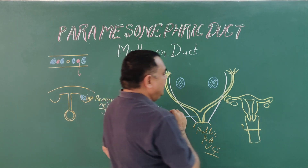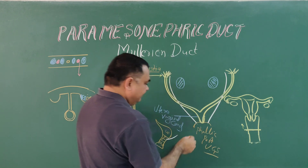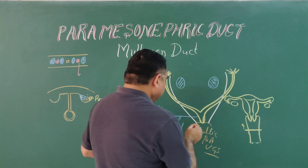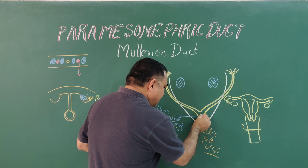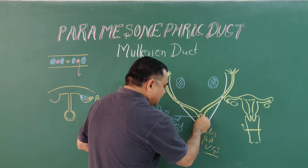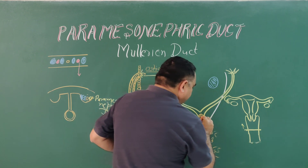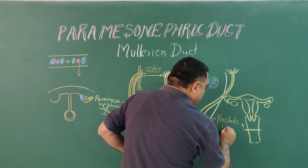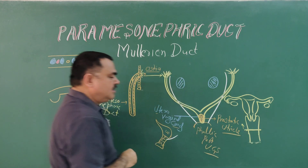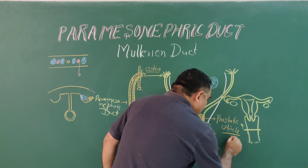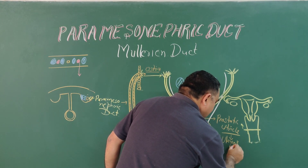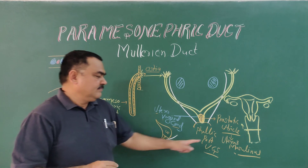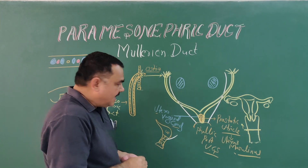In male, if you see in male, this utero-vaginal canal forms the prostatic utricle, also called the uterus masculinus, in male. And the remaining part disappears.